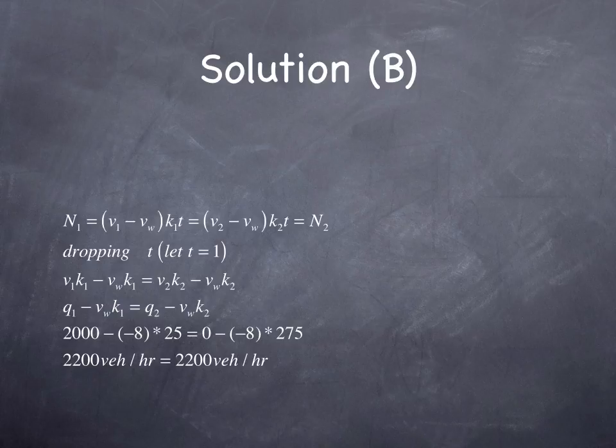We're looking for N sub 1 or N sub 2, and that's V sub 1 minus V sub W times K sub 1 times T. And let's equal 1. And we can substitute in Q sub 1 minus V sub W times K sub 1 equals Q sub 2 minus V sub W times K sub 2. Q sub 1 equals 2,000. V sub 1 equals minus 8. K sub 1 equals 25. And that equals 2,200 vehicles per hour.